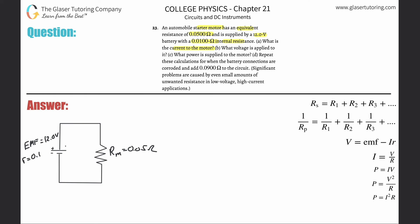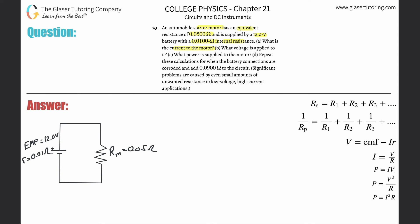The internal resistance is 0.01 ohms. Part A asks: what is the current to the motor? We need to recognize that the battery and the motor are connected in series. What is constant in series? The current. I remember it as 'IS' — current is constant in series.